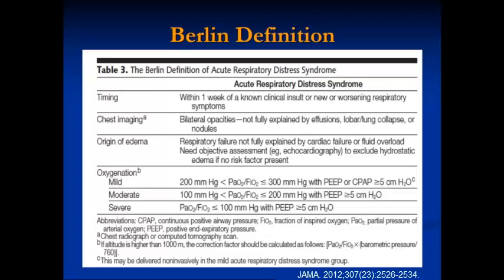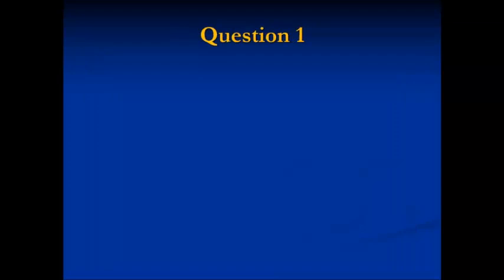We divide ARDS into mild, moderate, and severe — which is a new thing. For mild ARDS, the PF ratio is 200 to 300. For moderate, 100 to 200. And severe is less than 100.